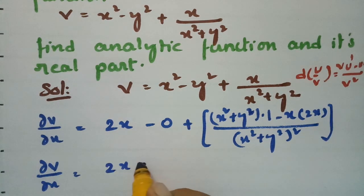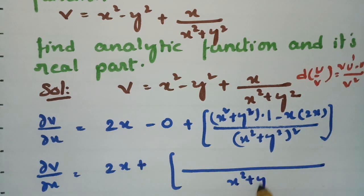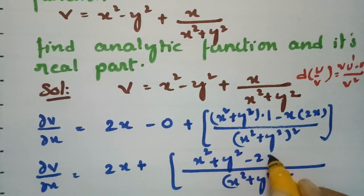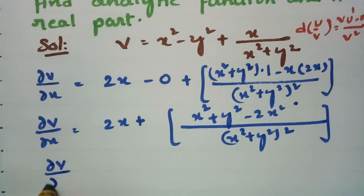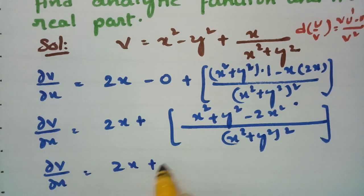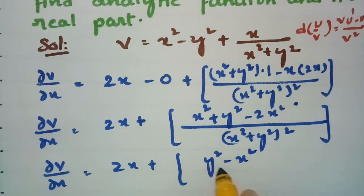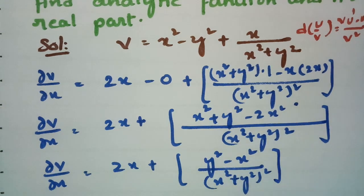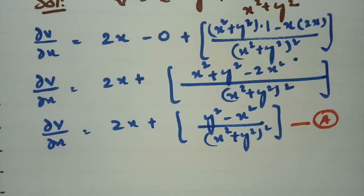So dou v by dou x is equal to 2x plus y square minus x square, all divided by x square plus y square whole square. This is equation number 1.